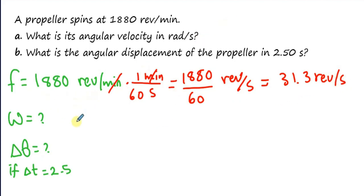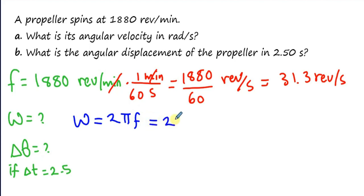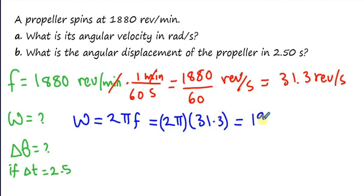To find omega using the frequency, omega equals 2 pi times f, so 2 pi times 31.3 equals 197 rad per second. This is the angular velocity.